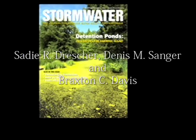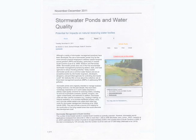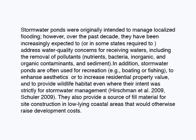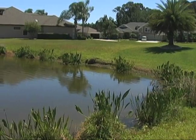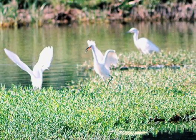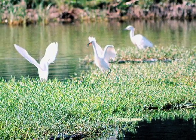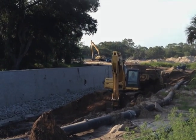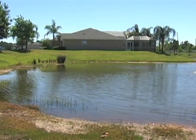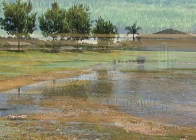In an article in Stormwater Magazine by Drescher, Sanger, and Davis, they said: stormwater ponds were originally intended to manage localized flooding. However, over the past decade, they have been increasingly expected to, or in some states required to, address water quality concerns for receiving waters, including the removal of pollutants such as nutrients, bacteria, inorganic contaminants, organic contaminants, and other sediment. In addition, stormwater ponds are often used for recreation, to enhance aesthetics, to increase property value, and to provide wildlife habitat, even where their intent was strictly for stormwater management. They also provide a source of fill material for site construction in low-lying areas. Over time, we have come to expect these stormwater ponds to perform in ways they were never intended, and it is clear that they struggle to keep up with these demands.